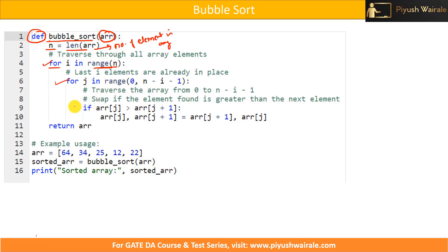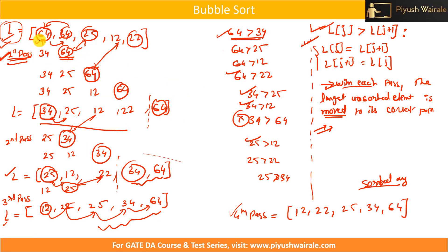What we are checking is: if the element at the j-th position is greater than the element at the j plus 1 position — the adjacent element — same as discussed in the previous video. For example, if 64 is greater than the adjacent element at position j plus 1.